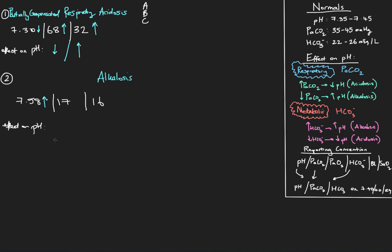We need to find what the primary cause of that alkalosis is — the best way is to see which component sends the pH in the same direction it's actually been sent. Looking at the respiratory portion: CO2 of 17 is below the normal range, and a low CO2 causes an increase in pH. So this CO2 is going to cause the pH to go up — we're starting to think this might be a respiratory alkalosis. Now the bicarb is low, below the normal range of 22 to 26. A low bicarb causes a low pH, so this bicarb is making the pH more acidic, trying to pull the pH downwards — which is not what's happened. So this must be the compensation, making this a respiratory alkalosis.